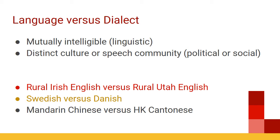Let's look at some examples. Take someone from a small town in Ireland and someone from a small town in Utah trying to speak to one another. The truth is they may not be mutually intelligible, at least not without a lot of practice, because of pronunciation and some vocabulary issues. Even though they're not mutually intelligible at first, we would never consider those as different languages — they're just different dialects of English that could become mutually intelligible with effort.